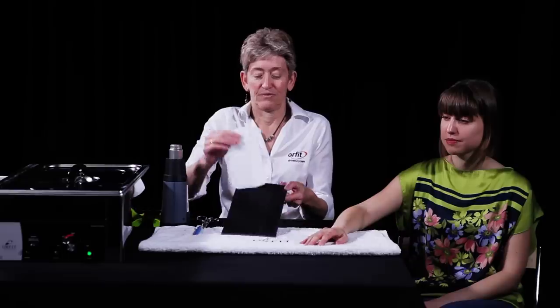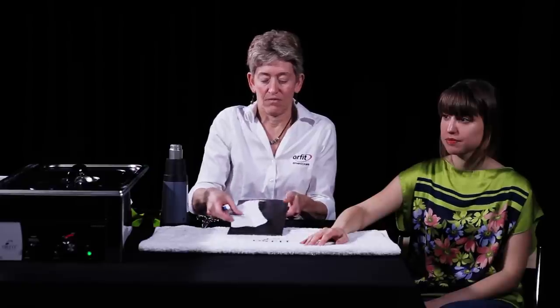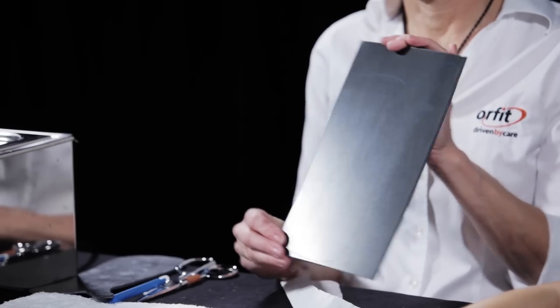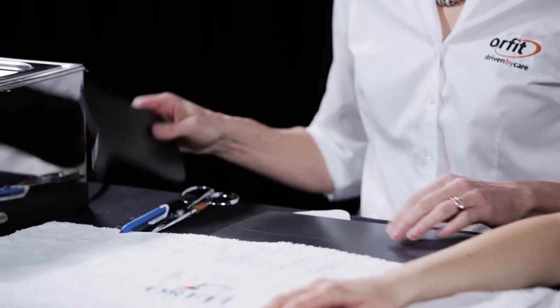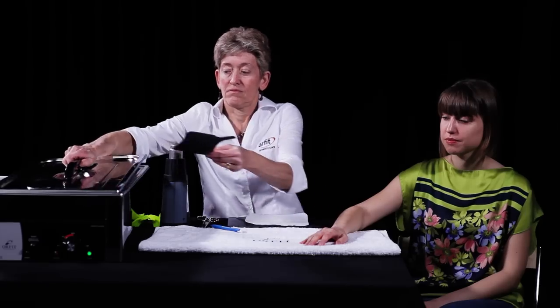Draw the patient's hand on a paper towel and make a pattern of the orthosis, which is then traced onto the thermoplastic material. Cut out the orthosis and place it back into the hot water to completely soften.